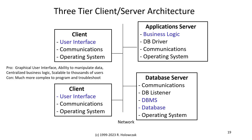Some advantages of the three-tier architecture are that the user gets to enjoy a graphical user interface and the ability to manipulate data. We've also centralized the business logic in the application server, and this architecture is scalable to thousands of users. The biggest disadvantage is that it's much more complex to program and troubleshoot—arguably the most complex in terms of software development and debugging.